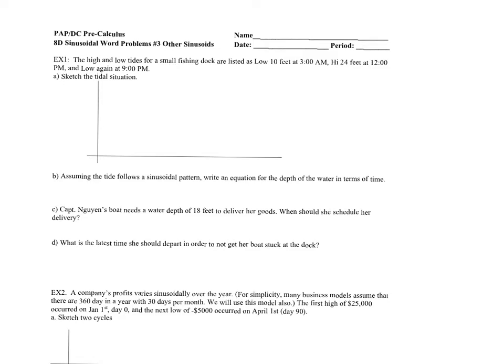So the first example: the high and low tides for a small fishing dock are listed as the low tide at 3 a.m. at 10 feet, and the high tide is 24 feet at 12 p.m., and then a low tide again — one complete cycle — at 9 p.m. When we have times, it's almost easier to put it in military time, so 3 a.m. is 0300 hours, and 9 p.m. is 2100 hours.